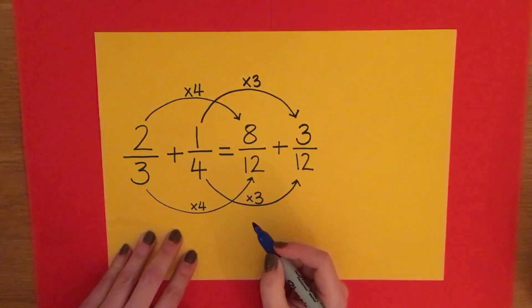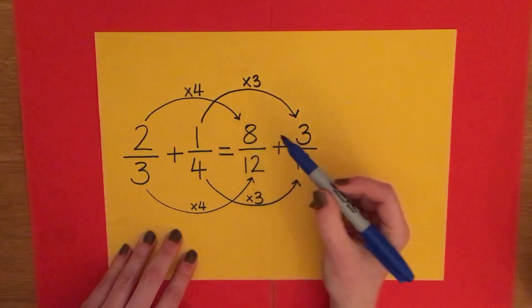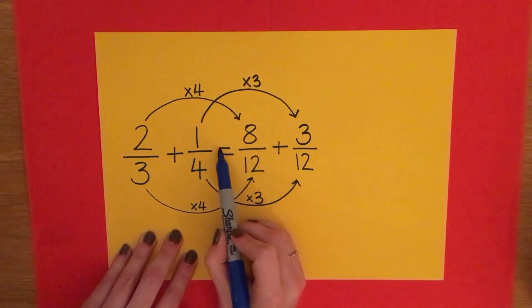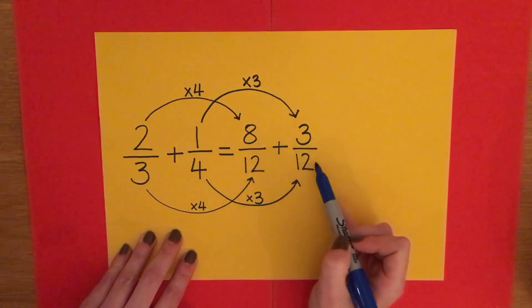So the proportions are still the same but the fractions look different. I've got two thirds add a quarter and that's the same as eight twelfths add three twelfths.